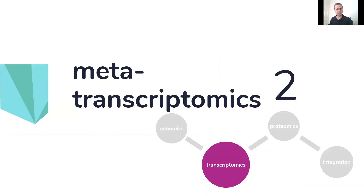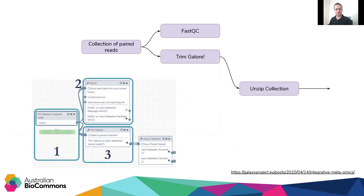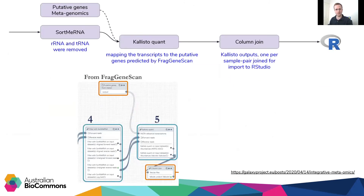Moving to metatranscriptomics — this workflow is significantly shorter, but still includes a quality control step parallel to TrimGalore, just like the metagenomics workflow, and splits the forward and reverse sequence reads. The split reads are filtered using SortMeRNA and passed to Kallisto Quant, where those putative gene predictions from the metagenomics workflow are incorporated. The Kallisto Quant outputs are converted into a tabular output for retention and inclusion in the integration.